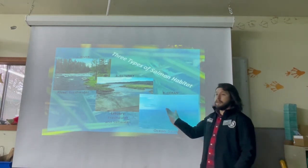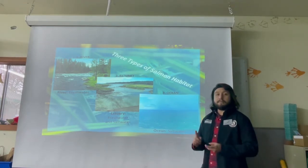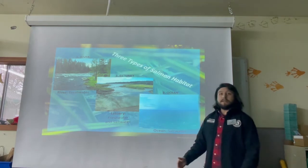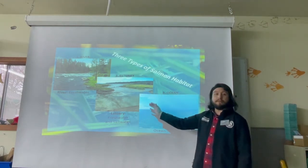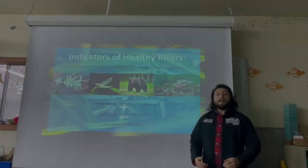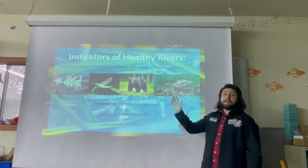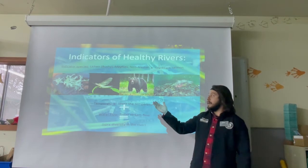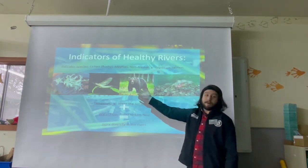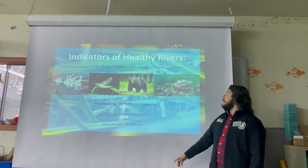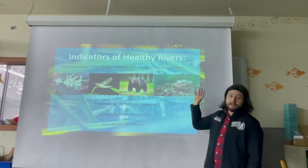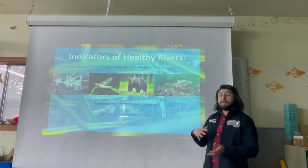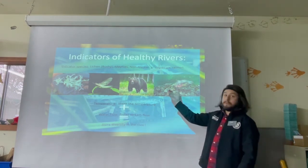These habitats provide cold temperatures, macroinvertebrates, other nutrients, and diverse, complex streams for our salmon. But how do we tell if these habitats are healthy? With the help of indicator species, we can tell how well a habitat is doing. An indicator species can be an animal or plant that signals habitat health. For river systems, examples include lichen, macroinvertebrates, apex predators such as bears, and salmon. If these indicator species are present, it tells us temperatures are lower, streams are fast-moving, and the habitat has good biodiversity.